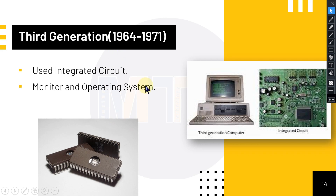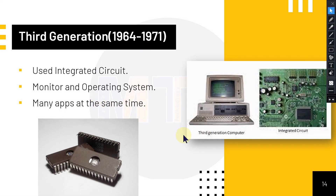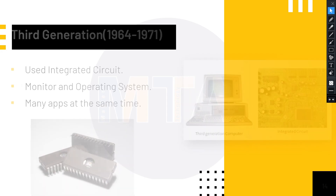From 1964 to 1971, computers were also using operating systems, giving them the ability to run an operating system and many applications at the same time — making them multitasking. These were the key changes that made the third generation better, smaller, and faster than the first and second generations.